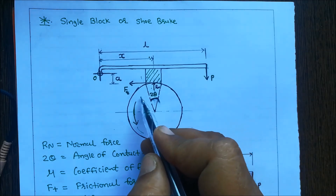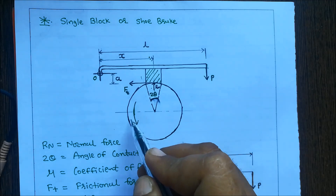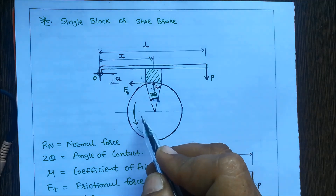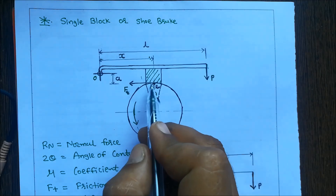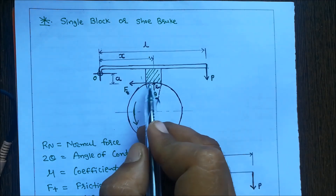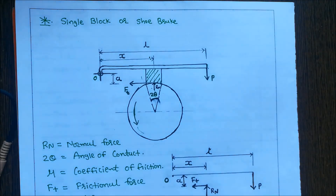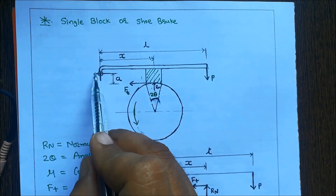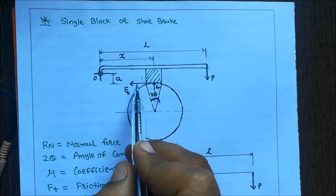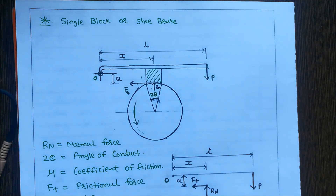If the brake drum is rotating in the anti-clockwise direction, then the tangential force acts towards the left, and the distance between the fulcrum and the tangential force is A.